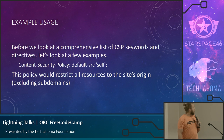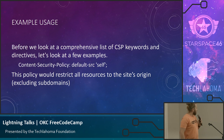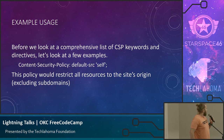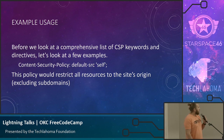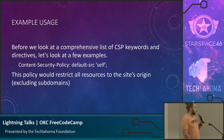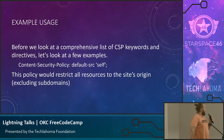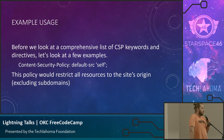Before we look at a list of keywords and directives, I'm going to go through a couple of examples. Here we set the content security policy header and we set a default source of self. The default source is going to cover any directives that we don't directly specify. So everything in this example must be loaded from self. Self refers to the current origin, so if we are on mydomain.com, the current origin is mydomain.com.